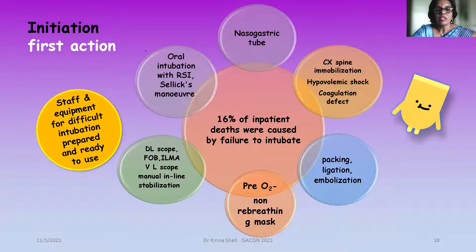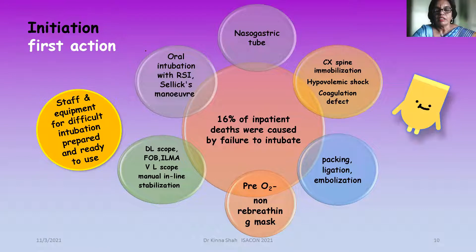The first steps should include nasogastric tube insertion, cervical spine immobilization, hypovolemic shock treatment, and coagulation defect detection. Then packing of the oral or nasal cavity, ligation or embolization of arterial bleeding, and pre-oxygenation with a non-rebreathing mask should be performed.